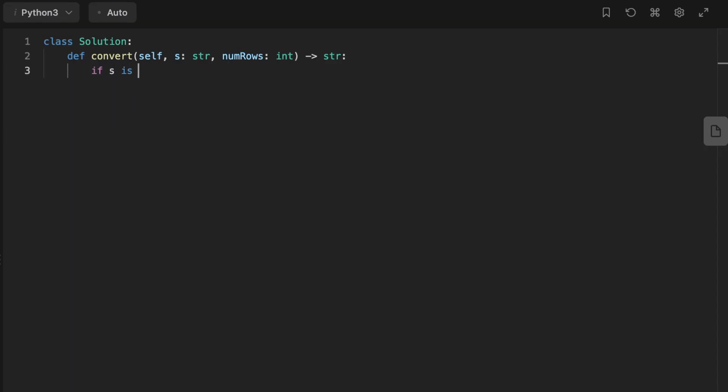So for the code explanation, the first thing we're gonna do is the basic condition: if the input string is equal to None or the number of rows is less than zero, we return. And also we need to return the input string if we only have one row.